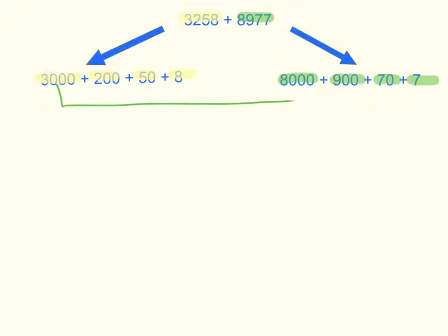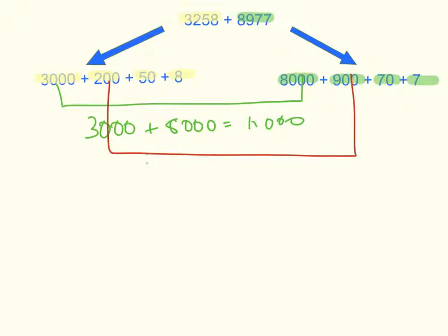Then I added the thousands. 3,000 plus 8,000 equals 11,000. Then I added the hundreds. 200 plus 900 equals 1,100.